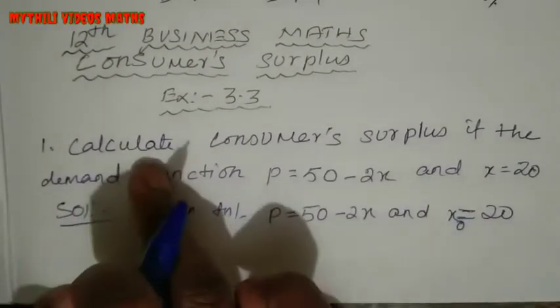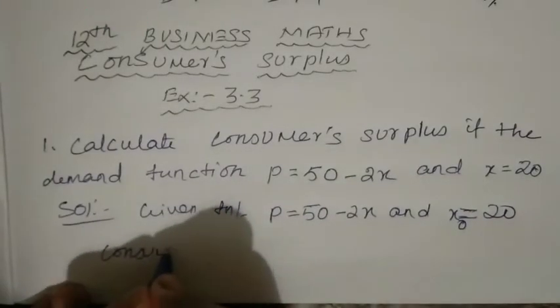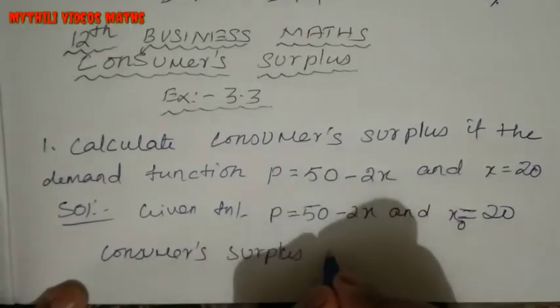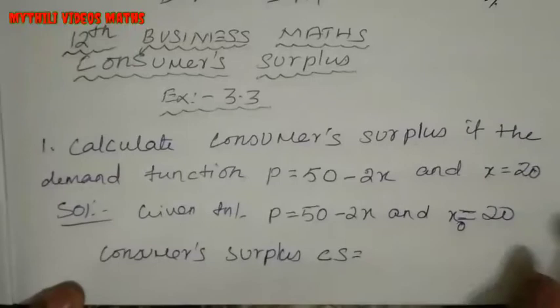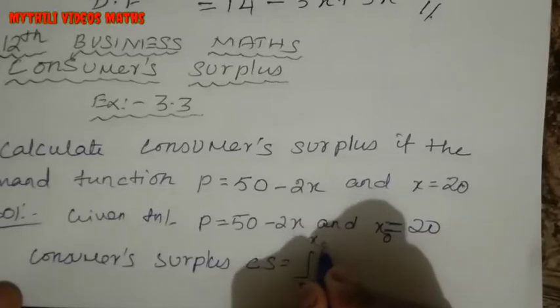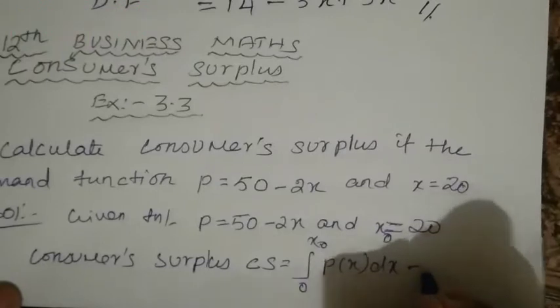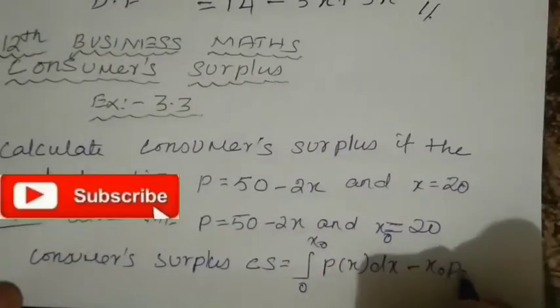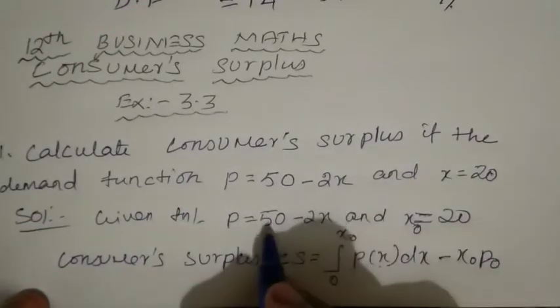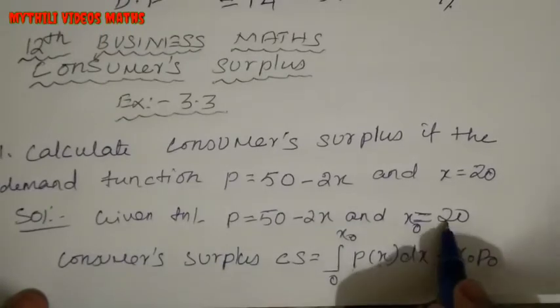This is the consumer surplus formula. CS equals the integral from 0 to x₀ of P(x)dx minus x₀P₀. We find the formula where P of x is 50 minus 2x, and x₀ is 20.